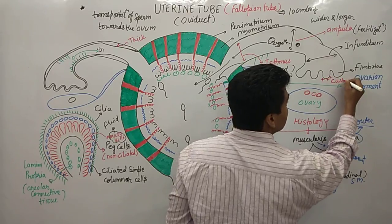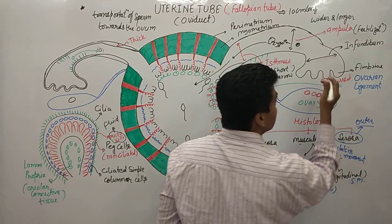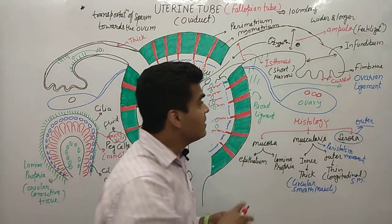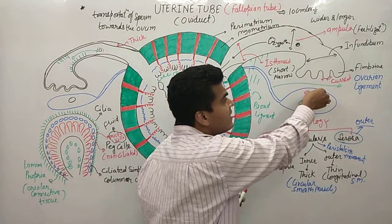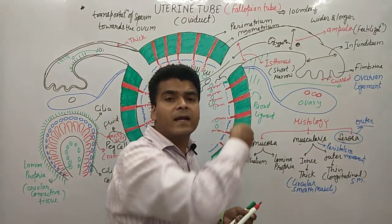A current forms near the infundibulum, and when the ovary releases the ovum, the fimbriae sweep the ovum into the fallopian tube.